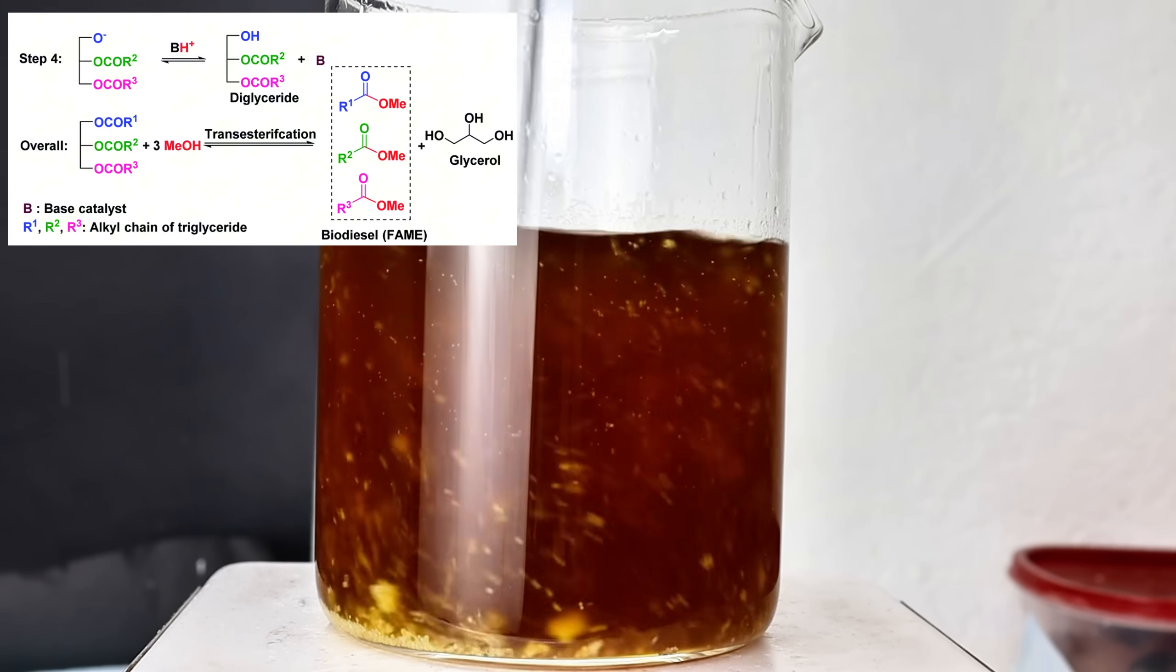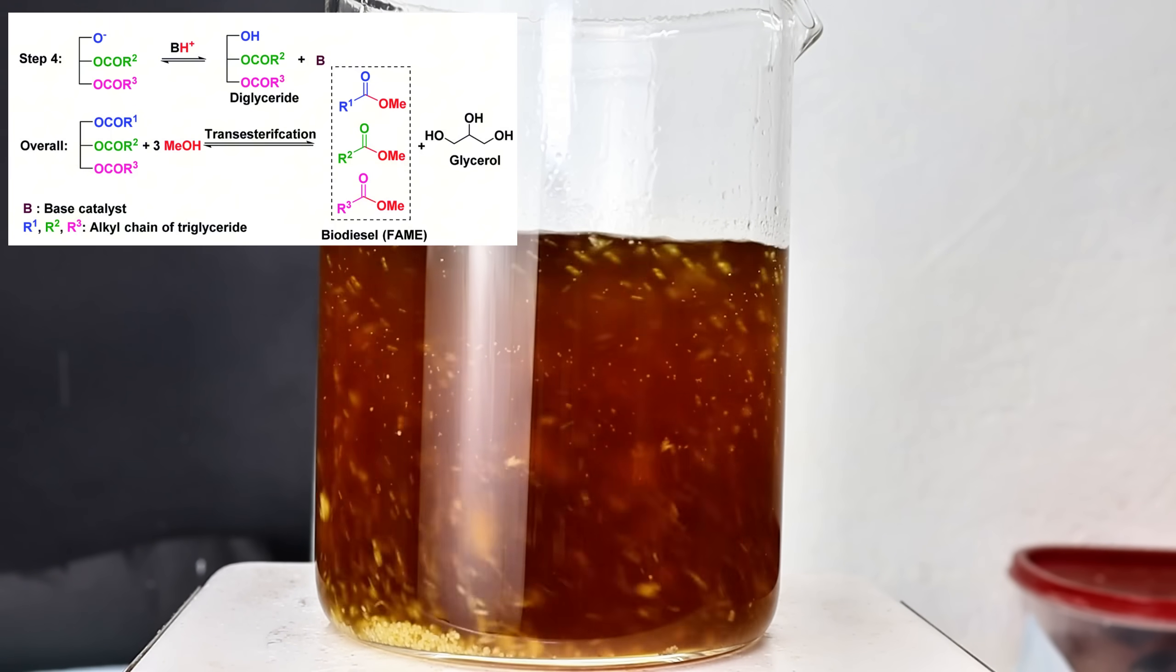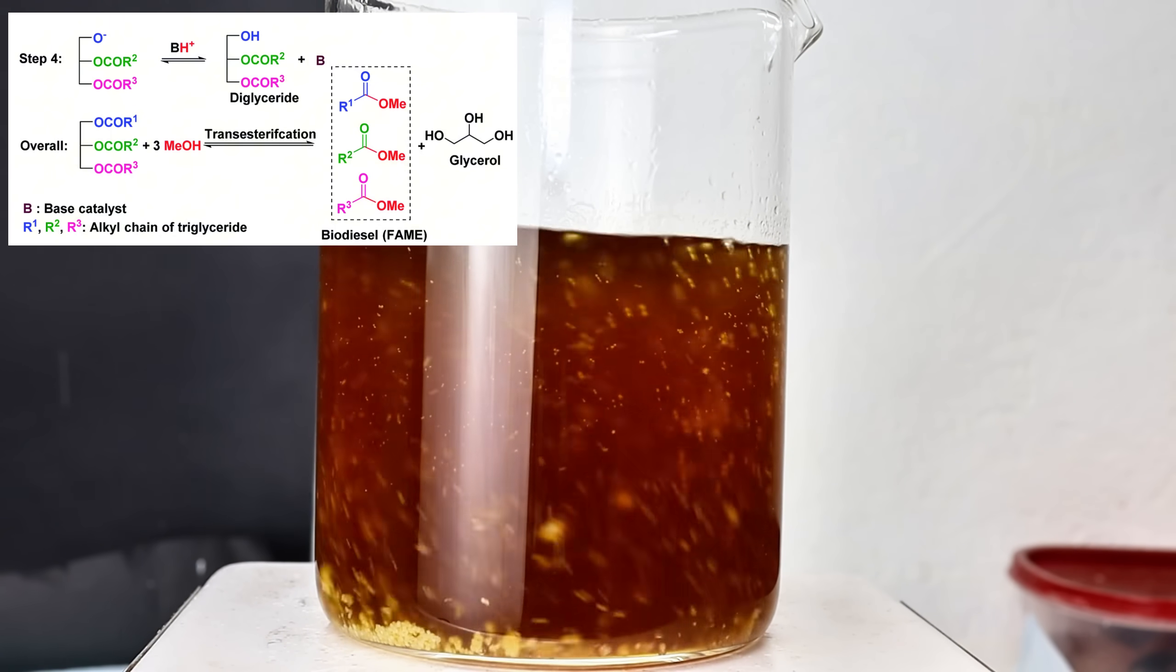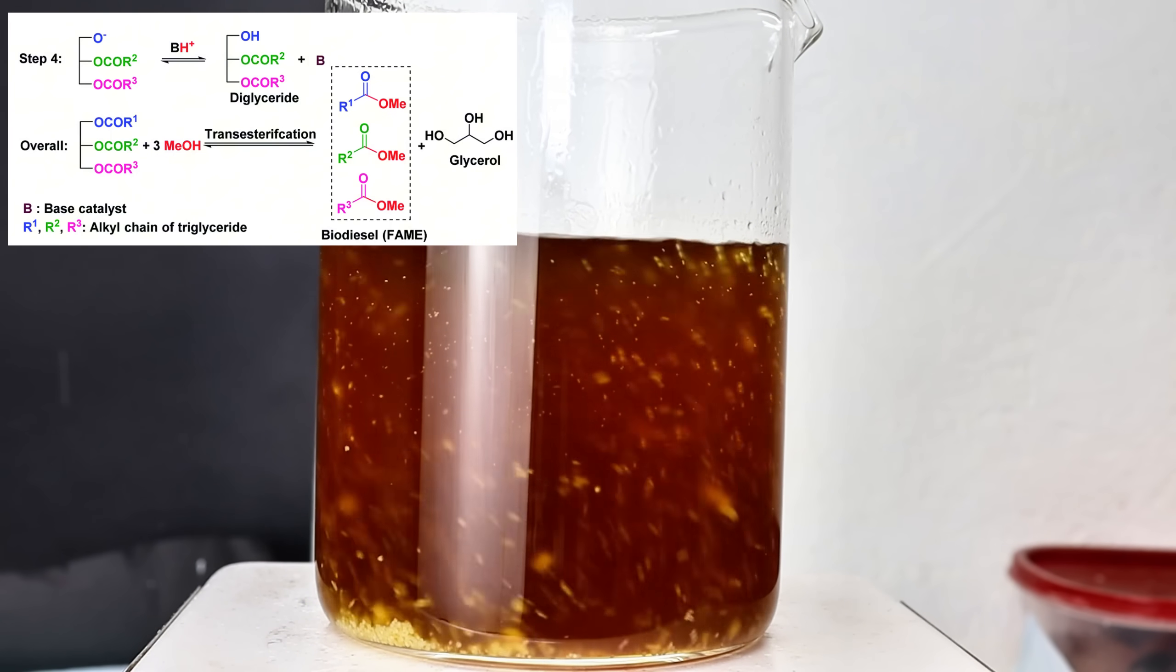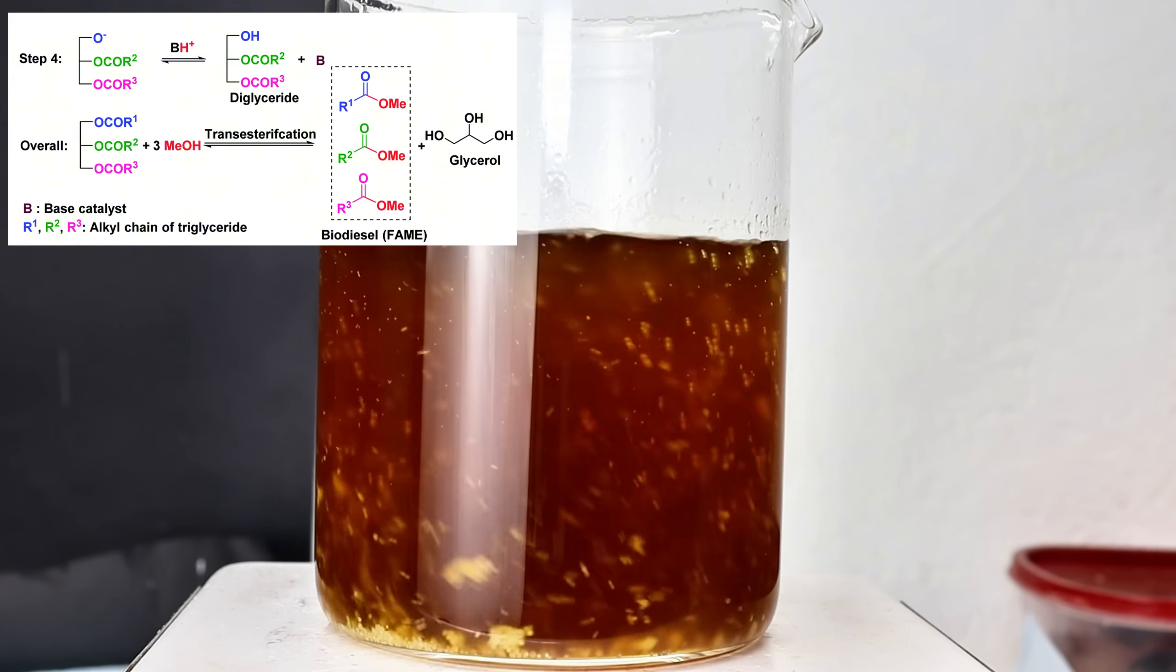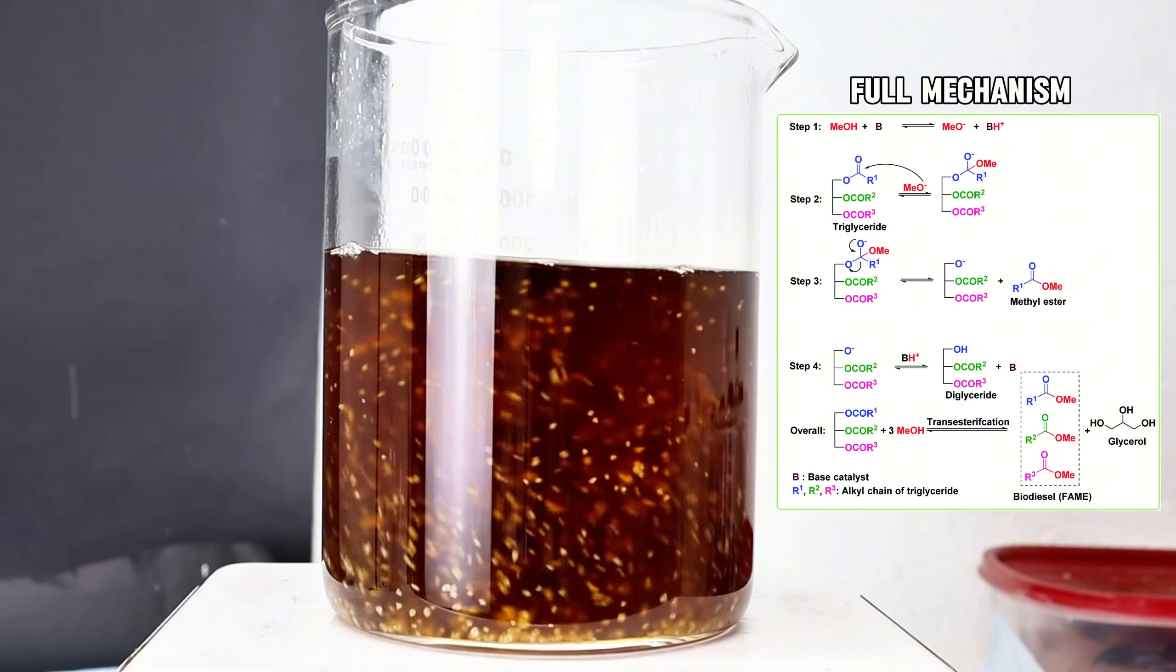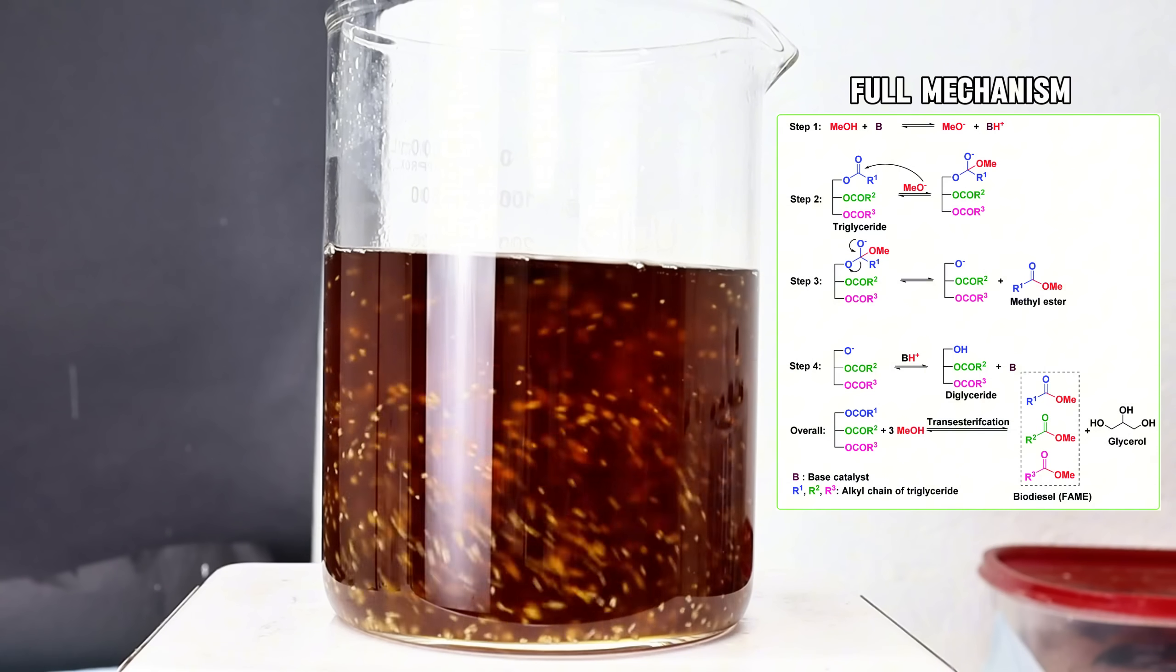This continues until all three fatty acids have been converted to their methyl esters, and the glycerol backbone is liberated as free glycerin. Since hydroxide is regenerated in the final step of the reaction, the sodium hydroxide essentially acts as an esterification catalyst, and this is why the 5 grams were a fairly large excess.